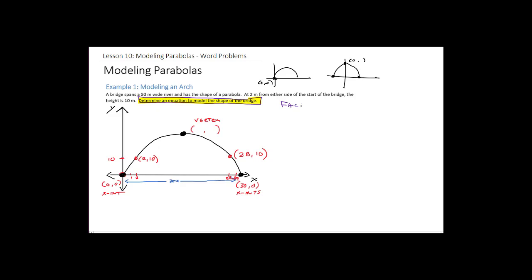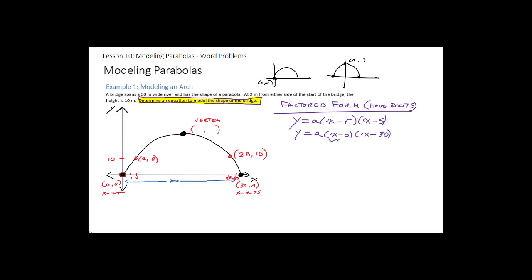If you have your x-intercepts or roots, use factored form. Factored form looks like this: y = a(x − r)(x − s). Let's substitute in our two roots, which are (0, 0) and (30, 0). So we get: y = a(x − 0)(x − 30), which simplifies to y = a·x(x − 30).